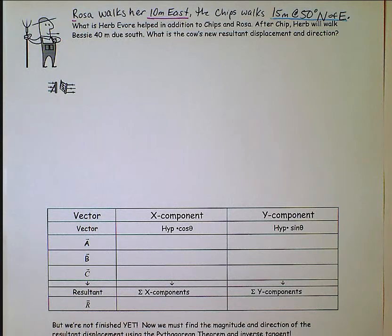Okay, I'm going to do the last example on the cow packet. This is the one that has three vectors.